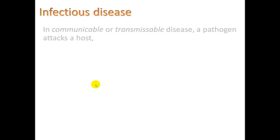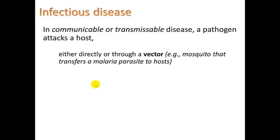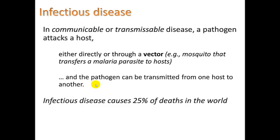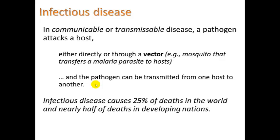Let's take a look at infectious diseases. In a communicable or transmissible disease, a pathogen attacks a host. These terms mean a disease that can be transferred from one person to another, either directly or through a vector — something that carries the pathogen. Mosquitoes can transfer malaria from one person to another, making the mosquito the vector. A pathogen can also be transmitted directly, such as an intravenous drug user transferring AIDS through a shared needle. Infectious disease causes 25% of deaths in the world and nearly half of deaths in developing nations.